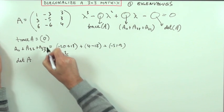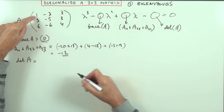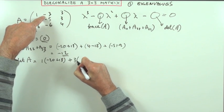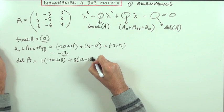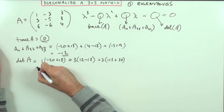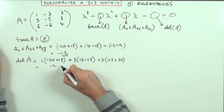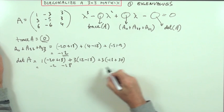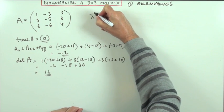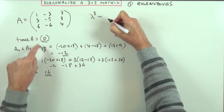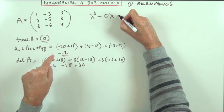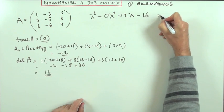The determinant of the whole matrix A, expanding along the top row: 1 times its minor (negative 20 plus 18), minus 3 times its minor (12 take away 18), plus 3 times its minor (negative 18 plus 30). That gives negative 2, and negative 6 so minus 18, plus 36, which is negative 20 plus 36 equals 16. So the characteristic polynomial is λ³ minus 0·λ² minus 12λ minus 16 equals 0.